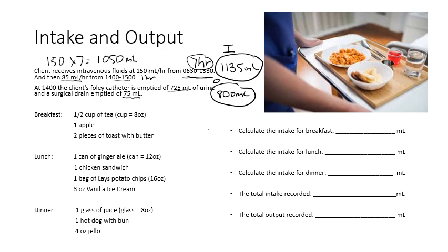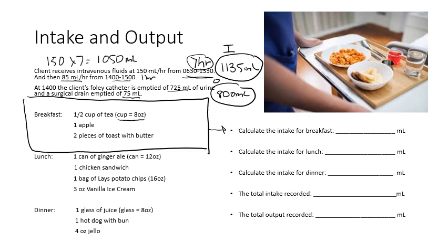For breakfast, the patient drank half of an 8-ounce serving, so 4 ounces. Since 1 ounce equals 30 mL, multiply 4 times 30 to get 120 mL. The apple and two pieces of toast are not counted. The total intake for breakfast was 120 mL.